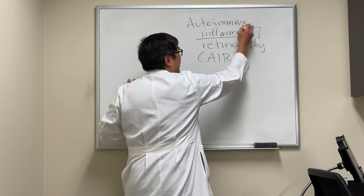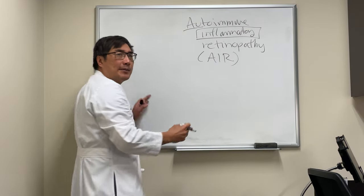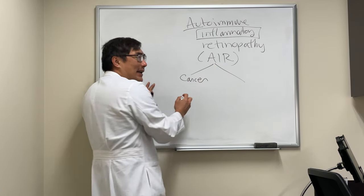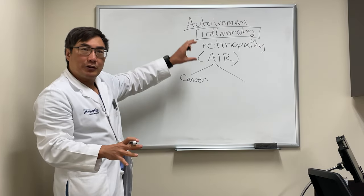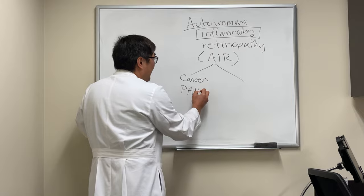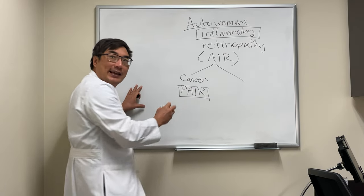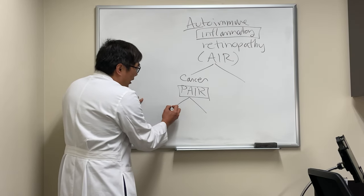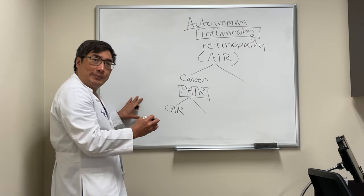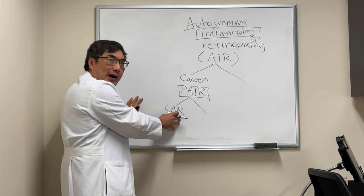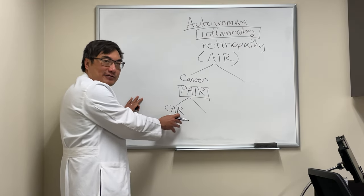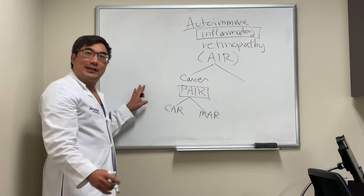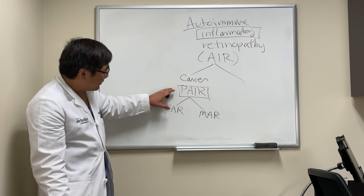This inflammatory response is against some antigen, and if the antigen happens to be a cancer, we call that a paraneoplastic autoimmune inflammatory retinopathy — PER. The cancers we see include CAR, cancer-associated retinopathy, usually small cell carcinoma of the lung but can be lymphoma or really any cancer, and MAR, melanoma-associated retinopathy. Both CAR and MAR are paraneoplastic.